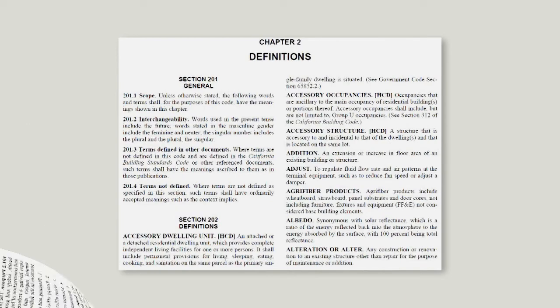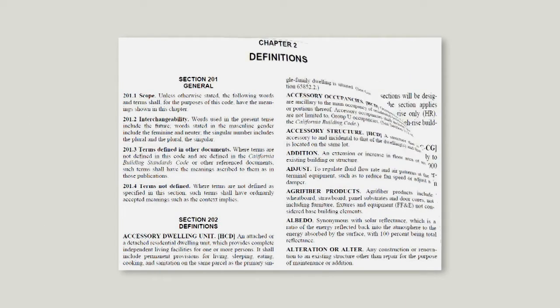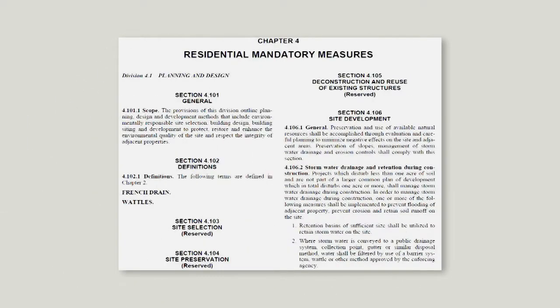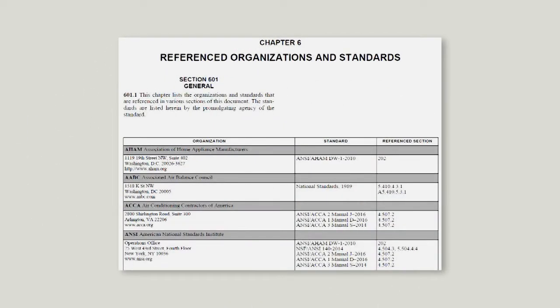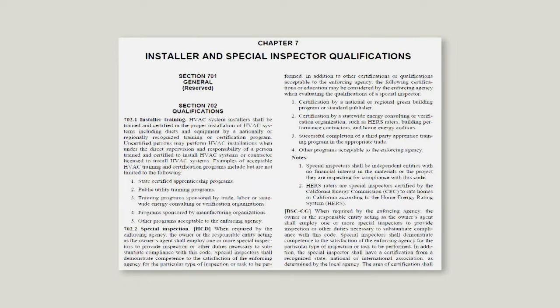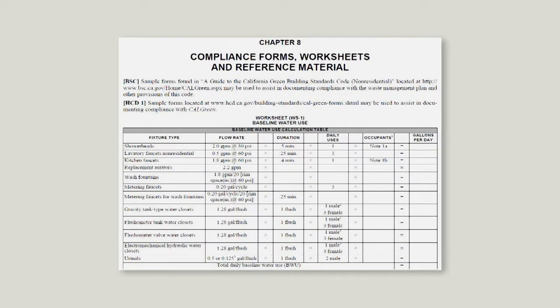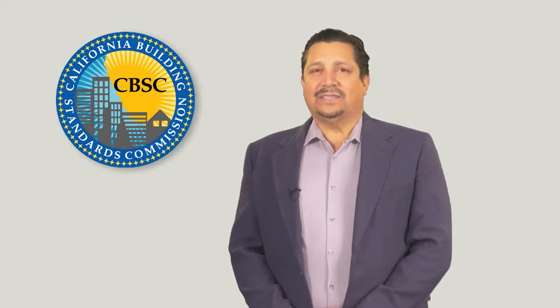Cal Green is divided into chapters and sections similarly to other parts of Title 24. Cal Green's chapters are: Chapter 1, Administration; Chapter 2, Definitions; Chapter 3, Scoping; Chapter 4, Residential Green Building Standards; Chapter 5, Non-Residential Green Building Standards; Chapter 6, Referenced Organizations and Standards; Chapter 7, Installer and Special Inspector Qualifications; and Chapter 8, Compliance Forms, Worksheets and Reference Material.